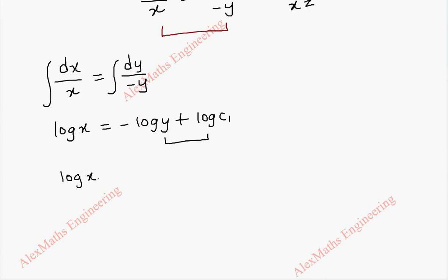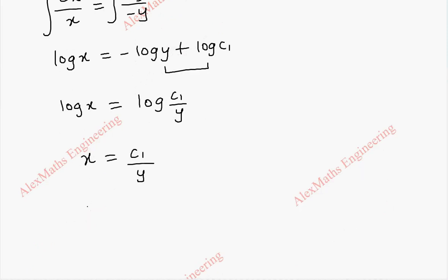Now, combining these two, log a minus log b is log a by b. So, this is the term in the numerator. This is minus, so it will come in the denominator. Now, removing log, we get x is equal to c1 by y and by cross multiplication, we get xy equal to c1. So, we take this as u, that is xy.